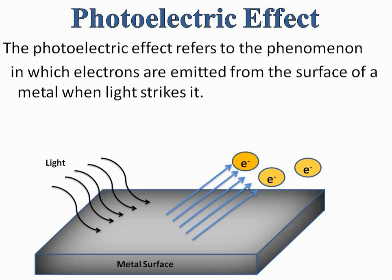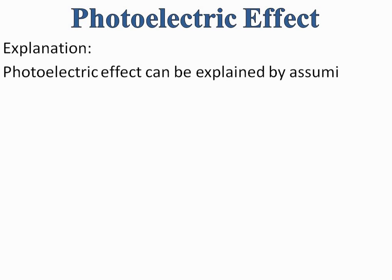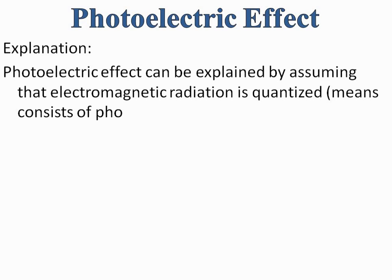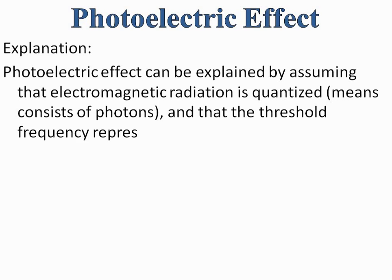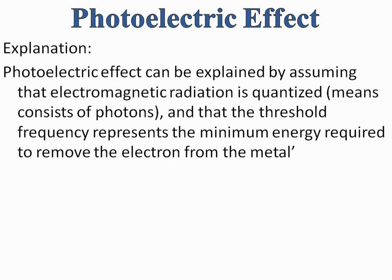There are a few parameters that must be met for the photoelectric effect to take place. The photoelectric effect can be explained by assuming that electromagnetic radiation is quantized, meaning it consists of photons, and that the threshold frequency represents the minimum energy required to remove electrons from the metal surface. The photons must have a minimum threshold frequency and hence minimum energy required to remove the electron.